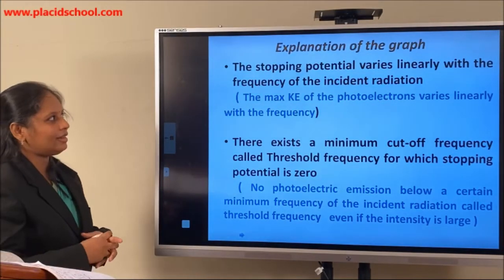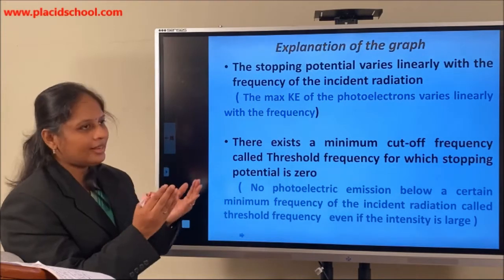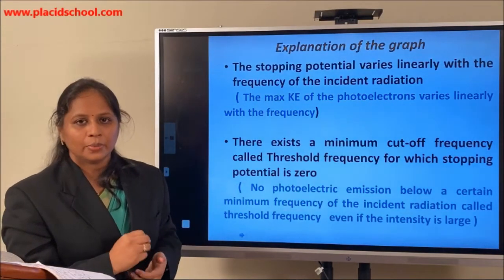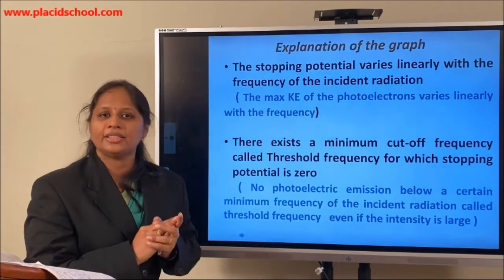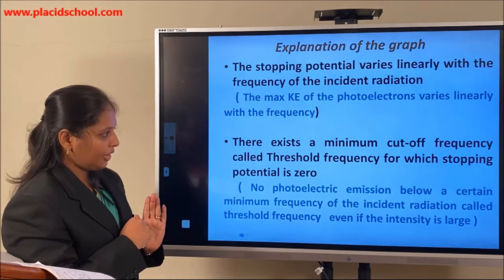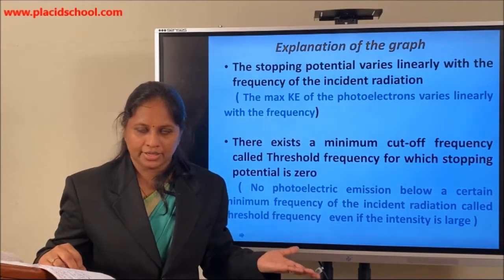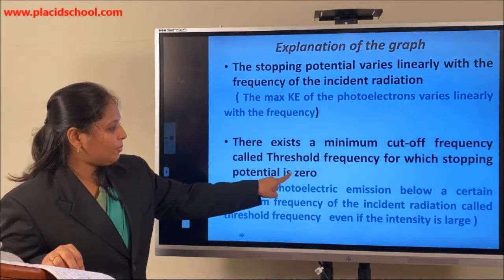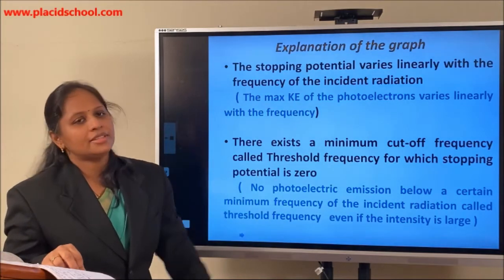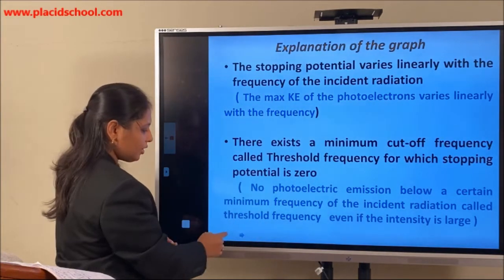Stopping potential varies linearly with the frequency of the incident radiation. Since stopping potential and kinetic energy are related — as kinetic energy increases, we need more stopping potential — the maximum kinetic energy of the photoelectrons varies linearly with the frequency of the incident light. It is proven that there is a minimum frequency required for photoelectron emission to occur; that minimum frequency is called the threshold frequency. At the threshold frequency, the stopping potential is zero, meaning no electrons are emitted. After the threshold frequency, electrons start emitting from the metal surface.